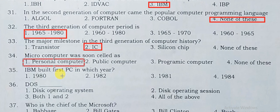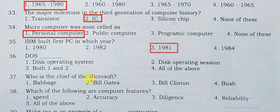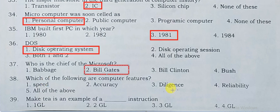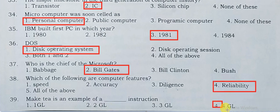IBM built the first PC in 1981. Which of the following are the computer features? Speed, accuracy, diligence, reliability — these are the computer features. An example of a 4GL instruction was also discussed.